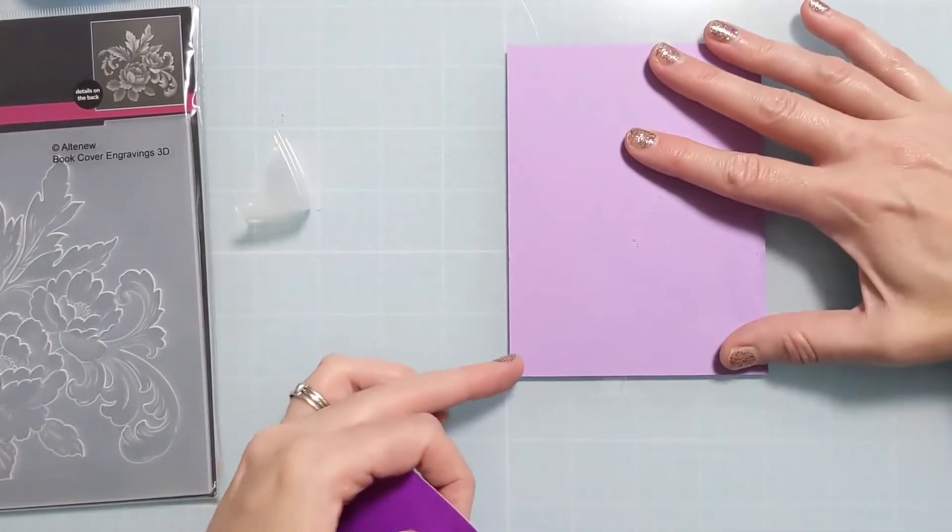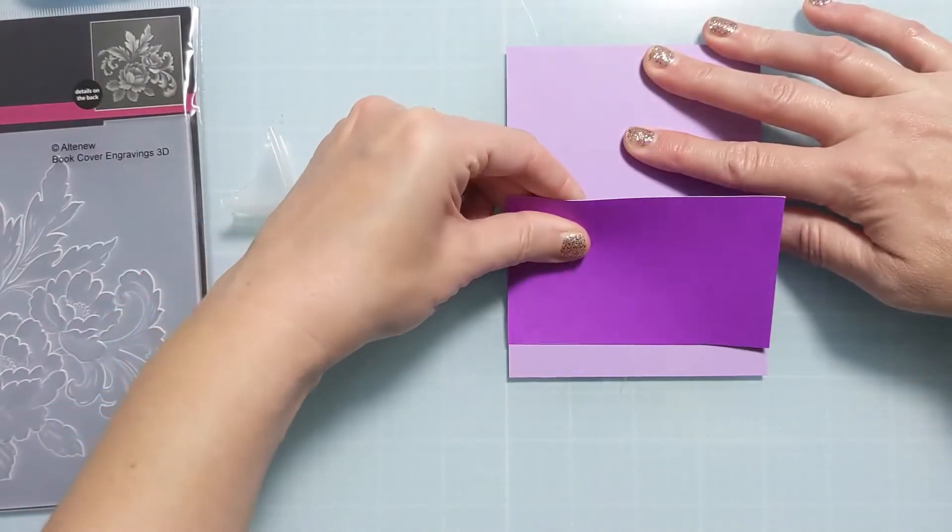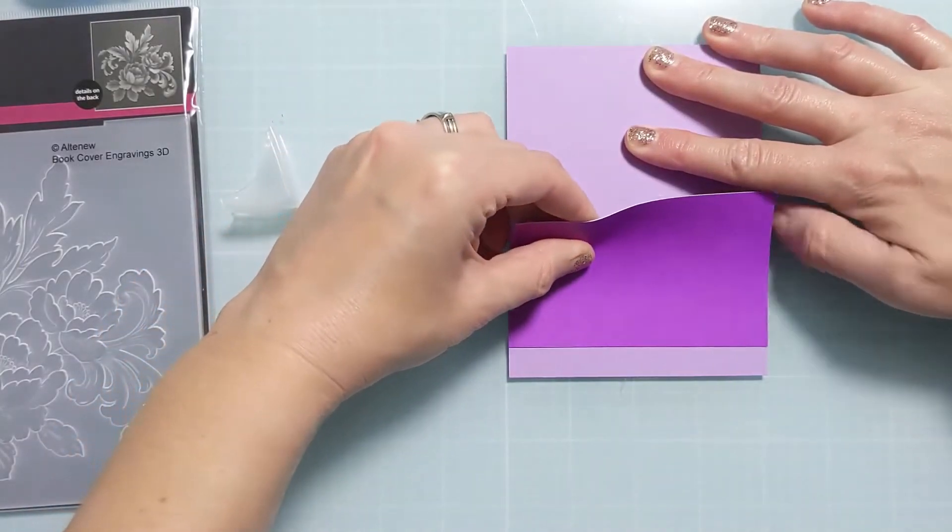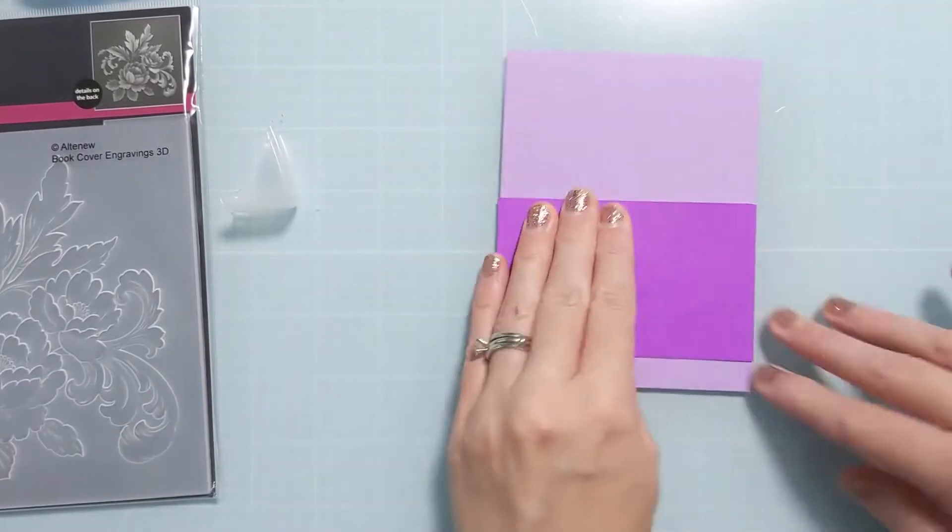The cardstock in the back is lighter weight and then this purple one is more of the heavier weight with the white core.